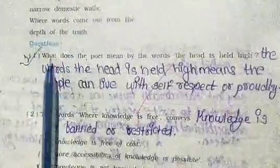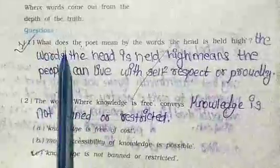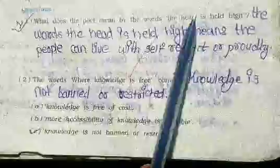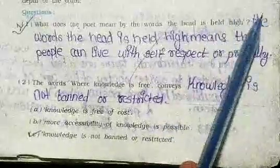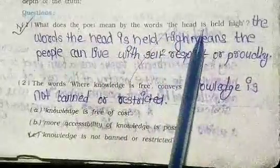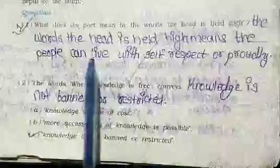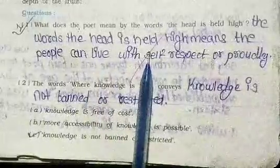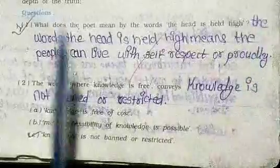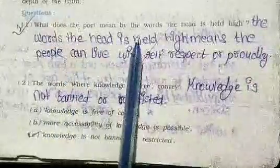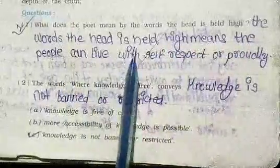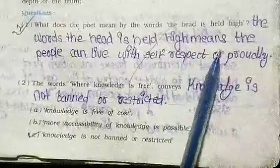Question number 1: What does the poet mean by the words 'the head is held high'? The words 'the head is held high' mean that people can live with self-respect or proudly.